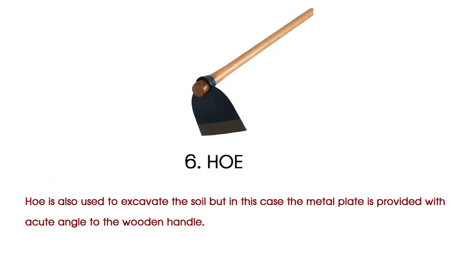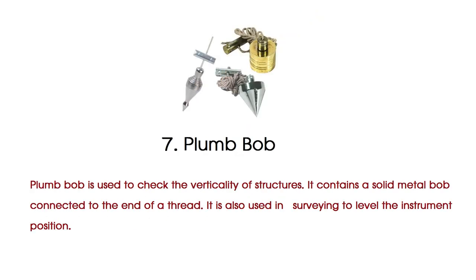Hoe is also used to excavate the soil, but in this case the metal plate is provided at a cute angle to the wooden handle. Plum bob is used to check the verticality of structures. It contains a solid metal bob connected to the end of a thread.